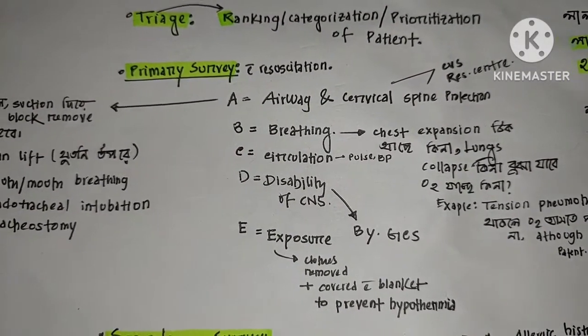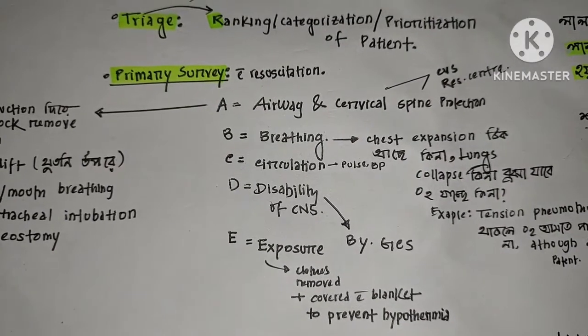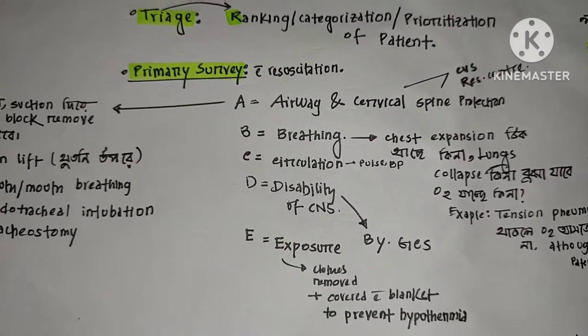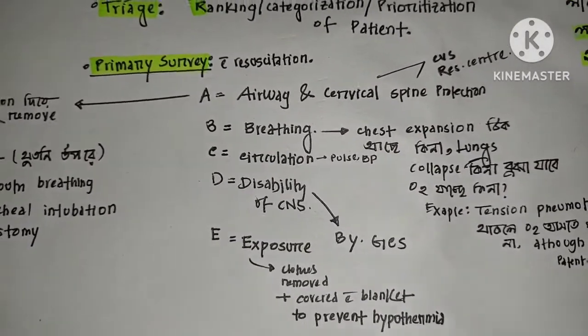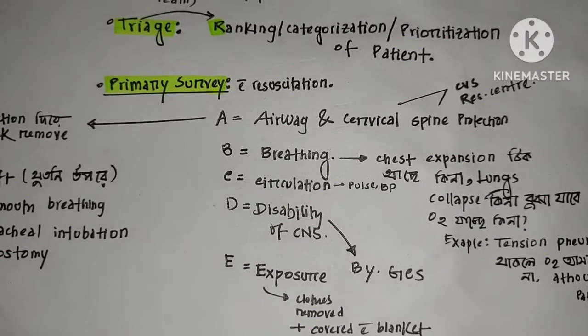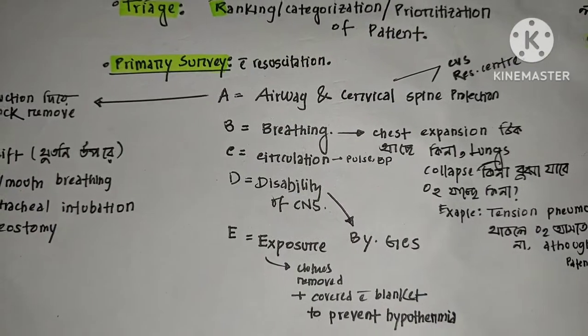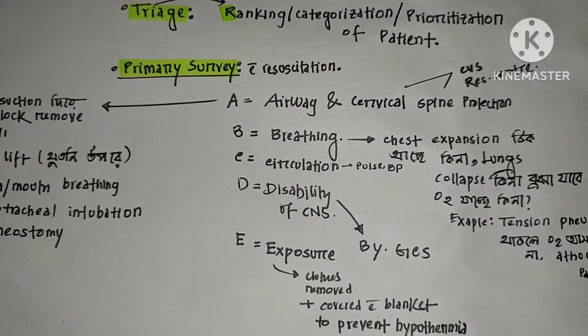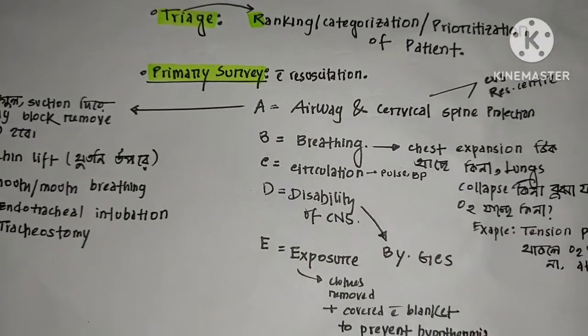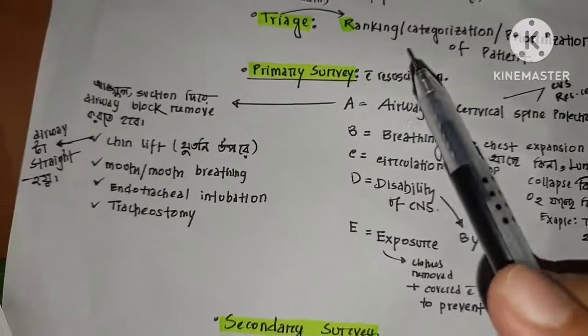Airway and cervical spine protection is important. The cervical region contains the spinal cord and the respiratory center — this is a basic vital center. Injury in this region is very critical to manage.